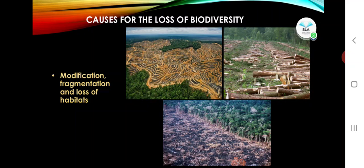Our demands — human settlement, urbanization, industrialization, agriculture, commercial plantations, grazing, construction of dams, and mining — often involve large-scale destruction of forests, grasslands, wetlands, and eutrophication of ponds and lakes. These activities kill organisms in large numbers.